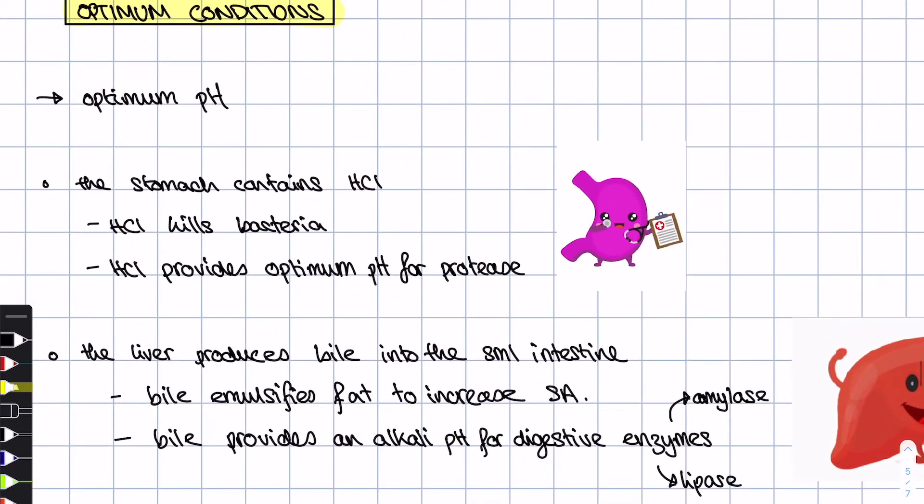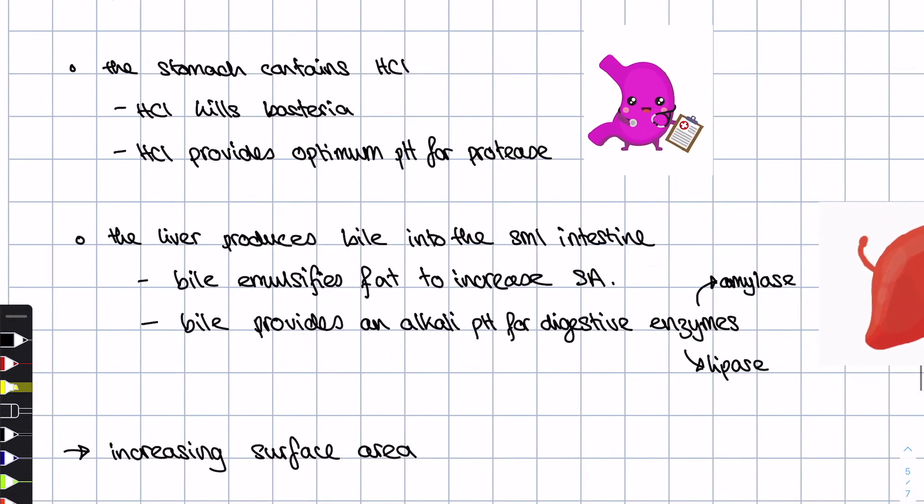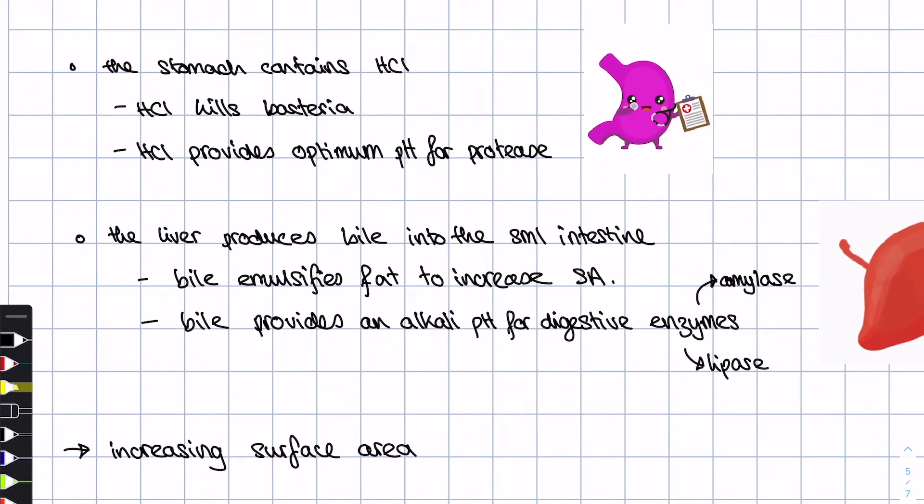Okay, so the next thing that we're going to cover is optimum conditions, i.e. how does the digestive system make it easy for enzymes to do their job? The first thing that the digestive system can do is that it provides the optimum pH for enzymes to act. There's two examples that you need to be familiar with of the digestive system doing this for the enzymes.